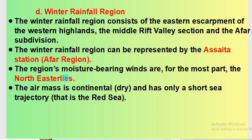The region's moisture-bearing winds are, for the most part, the northeasterly winds. The air mass is a continental air mass — it is a dry air mass and has only a short sea trajectory, that is, the Red Sea.